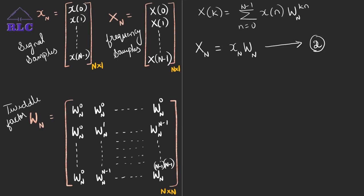Where W_N is the twiddle factor matrix and it is a square matrix. If you observe the values in the square matrix, it is a symmetric matrix — meaning if we take the transpose of the matrix, it remains the same. So W_N is said to be a linear transformation matrix — it is symmetric in nature.